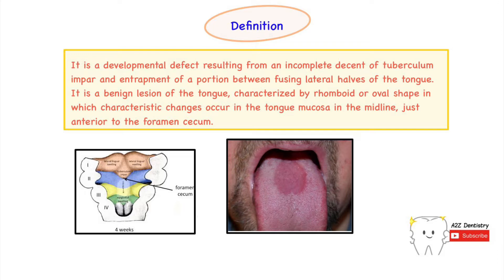The lesion is characterized by a rhomboid or oval-shaped area which is devoid of any papillae, located in the midline just anterior to the foramen cecum. This definition is comprehensive — thoroughly remembering it allows one to describe both the pathogenesis and some clinical features as well.